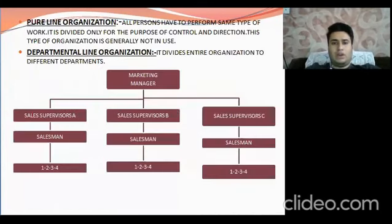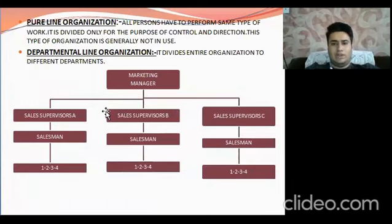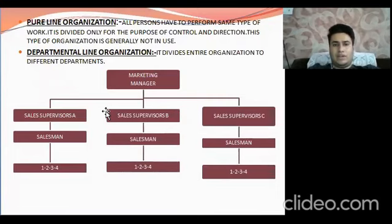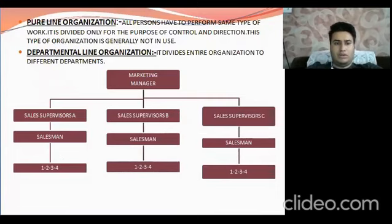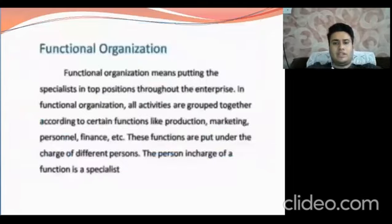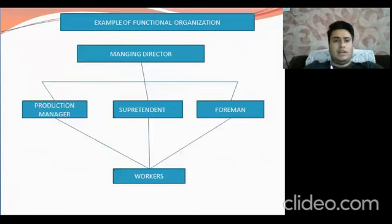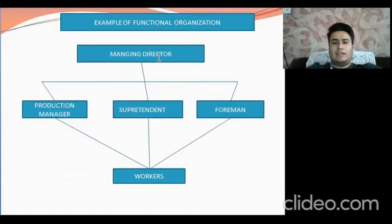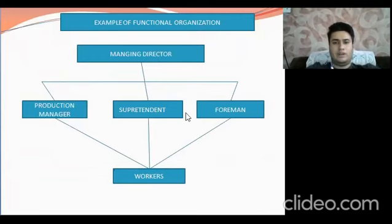In the pure line organization chart, it is only sales-related — no technical or mechanism-related functions. Functional organization overcomes all these limitations. In its flowchart, the managing director has three specialist experts under them: first is production manager, second is superintendent, and third is foreman — and all these are above the workers.